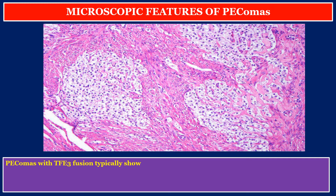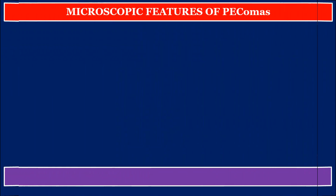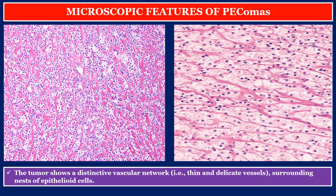PEComas with TFE3 fusion typically show nested alveolar growth of epithelioid clear cells, low-grade atypia, and rare mitosis. In these two photos, the tumor shows a distinctive vascular network — thin and delicate vessels surrounding nests of epithelioid cells.